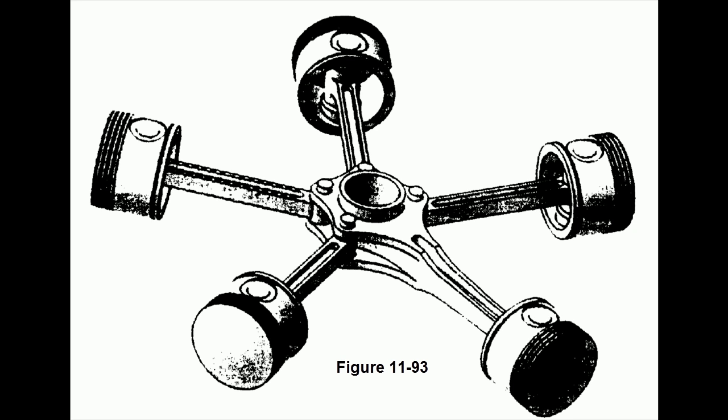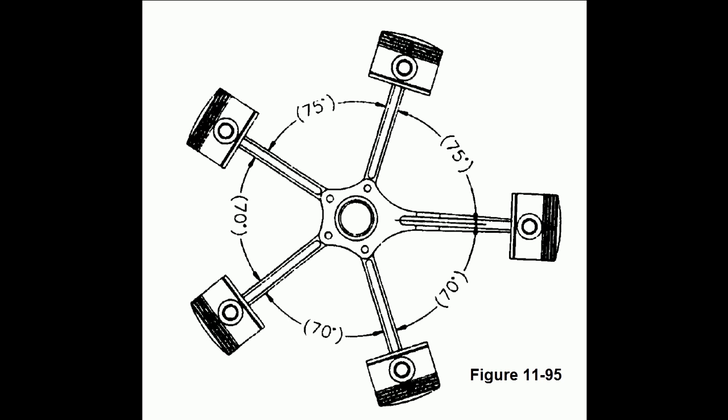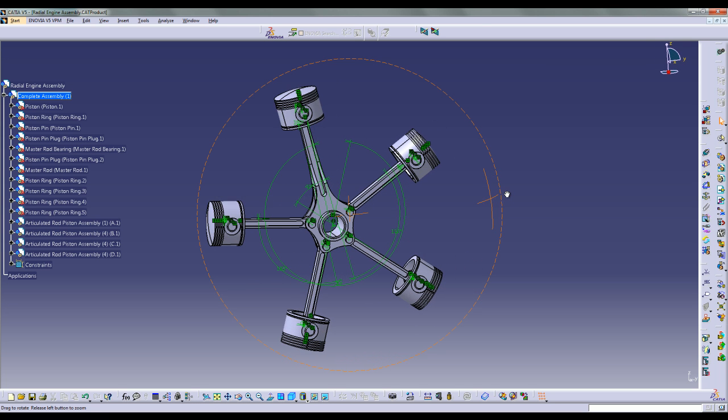Hello ladies and gentlemen, this is a tutorial on how to create the individual parts and assemble the parts for the radial engine assembly. All the images are linked in the description below. It is also recommended that you print and have a hard copy of all the figures listed in the description below, just to help you understand where the dimensions are coming from and to have a better overall feel for the part you are creating. For this tutorial we recommend that you constrain most of the parts to the origin just to simplify the creating and assembly process.